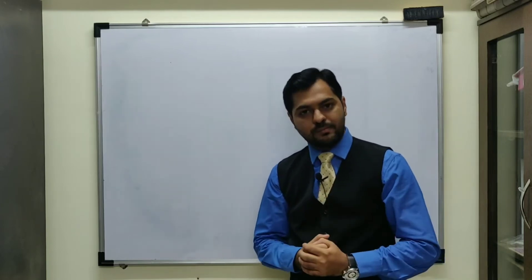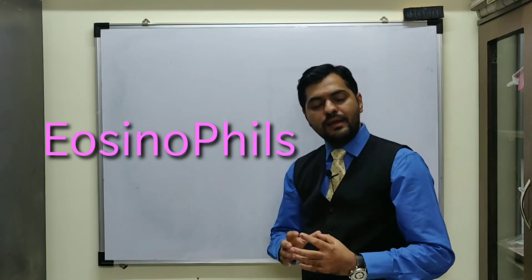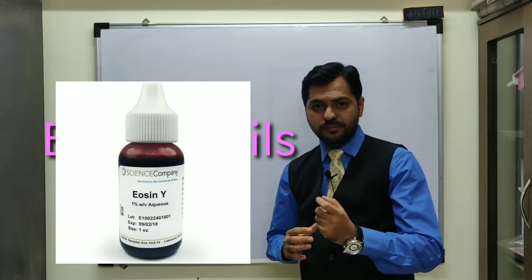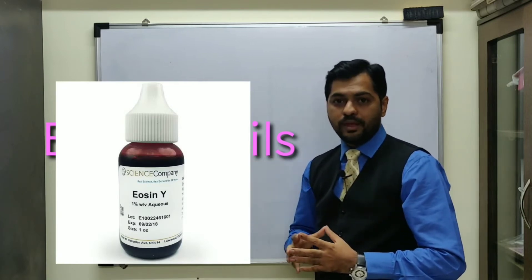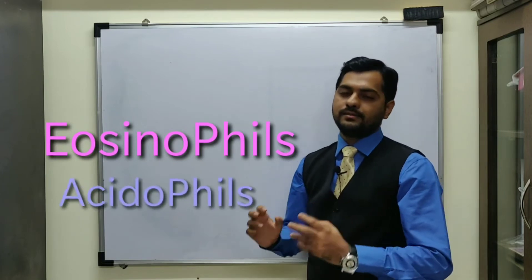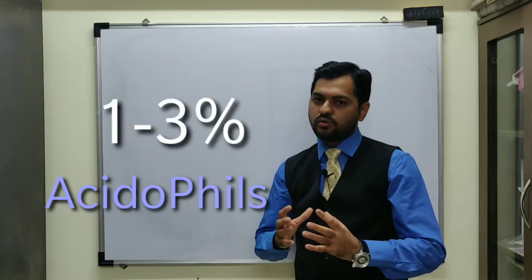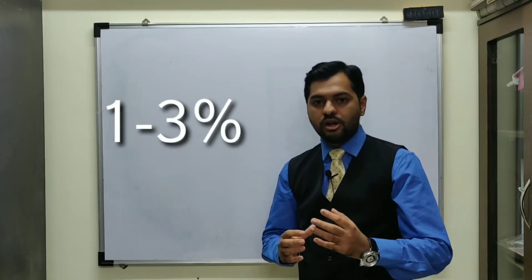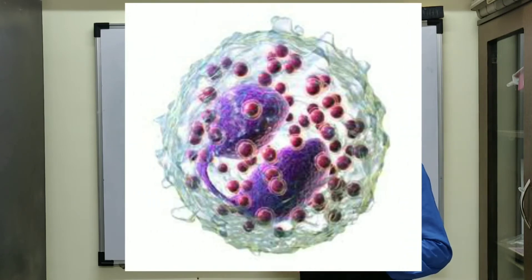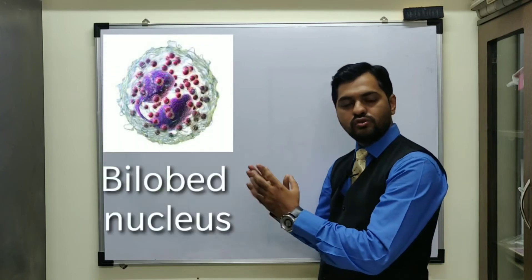Moving to the next type of cell, the eosinophils. Eosinophils are mainly stained by acidic dyes like eosin, hence the name eosinophil. Since eosin is an acidic dye, eosinophils are also known as acidophils. Their concentration is around 1 to 3 percent of total WBCs. The nucleus shows a bilobed structure, with two lobes.